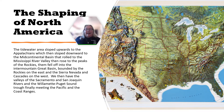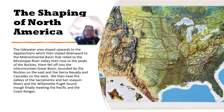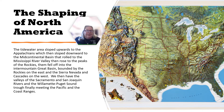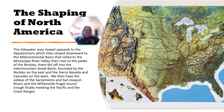The tidewater area — which is along the east coast of the United States, specifically Maryland where I'm from — sloped upward to the Appalachians, then downward to the mid-continental basin rolling to the Mississippi River Valley, then rose to the peaks of the Rockies, fell off to the Intermountain Great Basin, and continued through the valleys of the Sacramento, San Joaquin, and Willamette-Puget Sound trough, finally meeting the Pacific and the coastal ranges. This is basically a topographical east-to-west cross-section of the U.S.